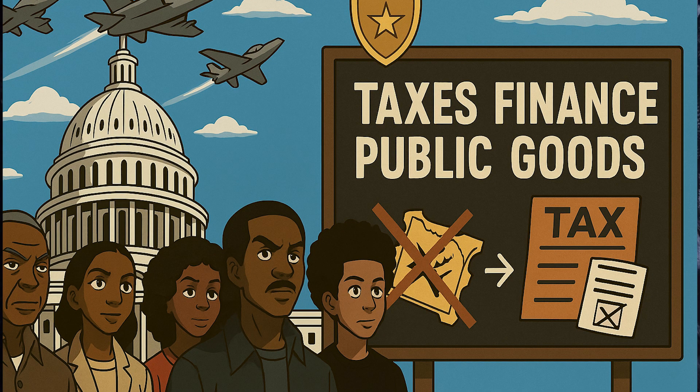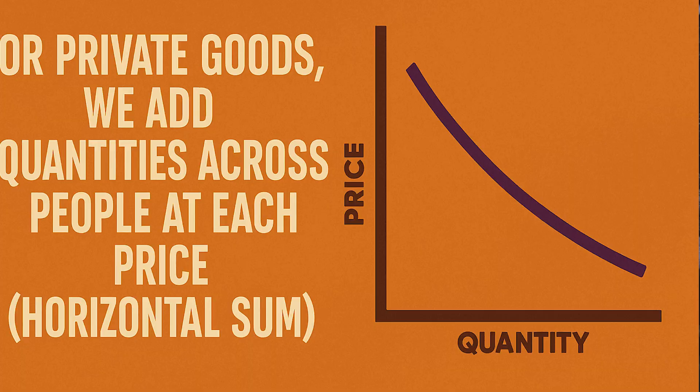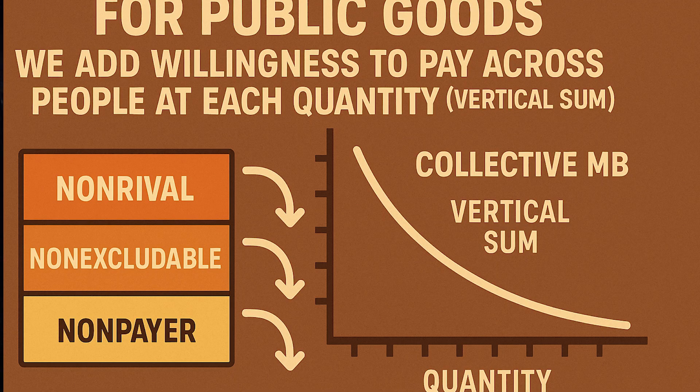For private goods we add quantities across people at each price. For public goods, everyone consumes the same quantity, so we add willingness to pay across people at each quantity — the vertical sum. That gives us a collective marginal benefit curve. We then compare that marginal benefit vertical sum to the marginal cost to provide one more unit.